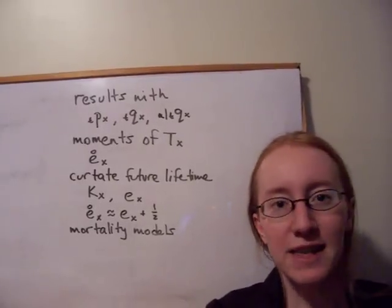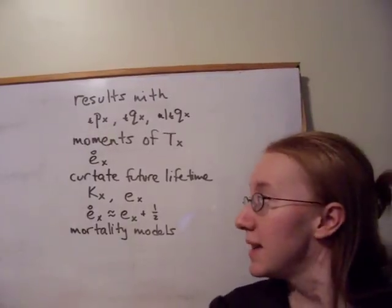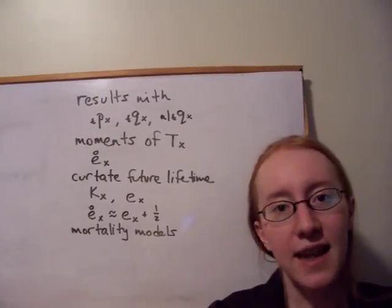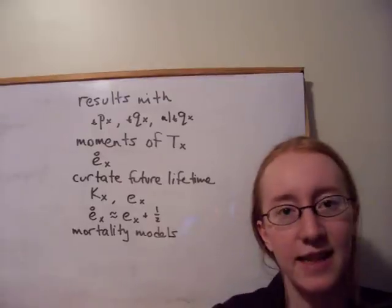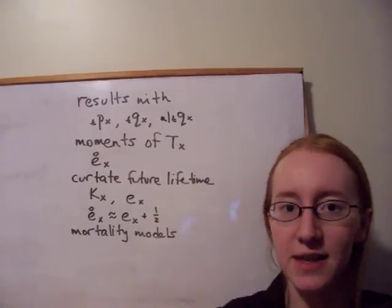Another thing we can do, of course, is find the mean and variance of that random variable. The mean we call EX, and that's known as the curtate future lifetime. That's just the average number of complete years that a life age X is going to live in the future.